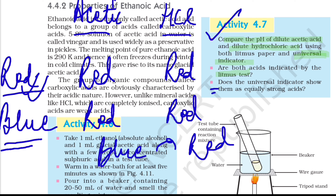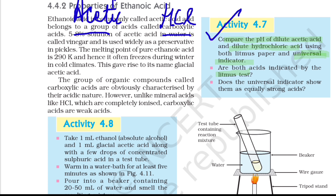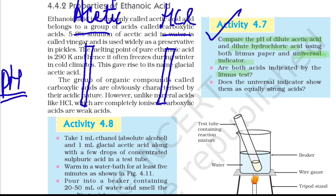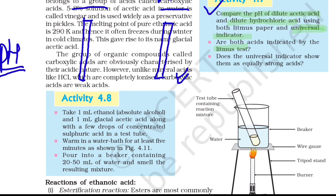Both acids are indicated by the litmus test. But now we will use the second method: does the universal indicator show them as equally strong acids? When we dip the pH paper into the acetic acid solution, we will see a change in its color. Similarly, we will see a change in color when we use it with HCl.